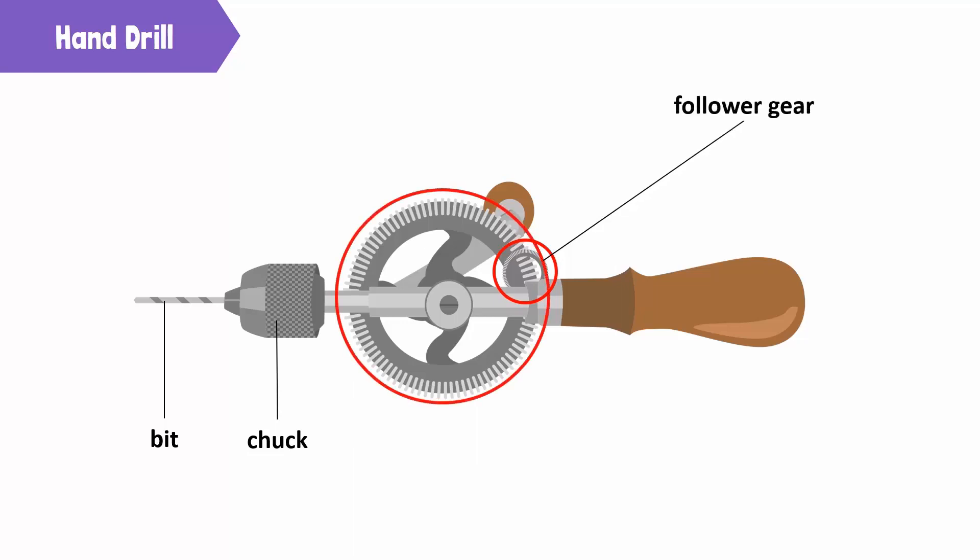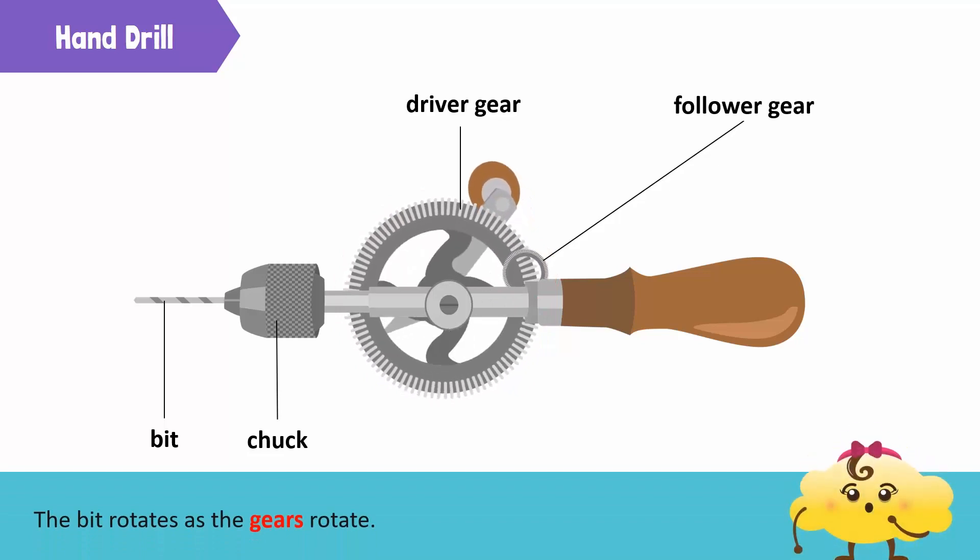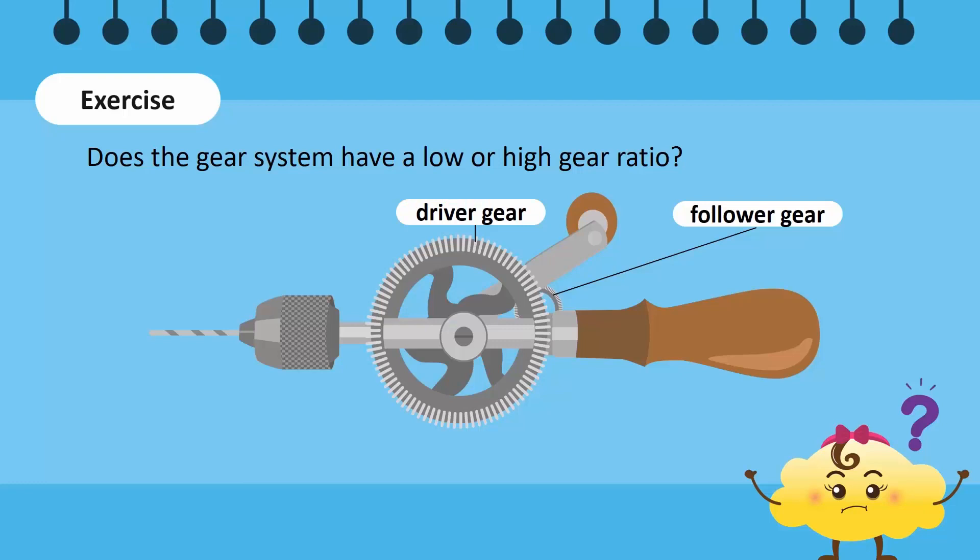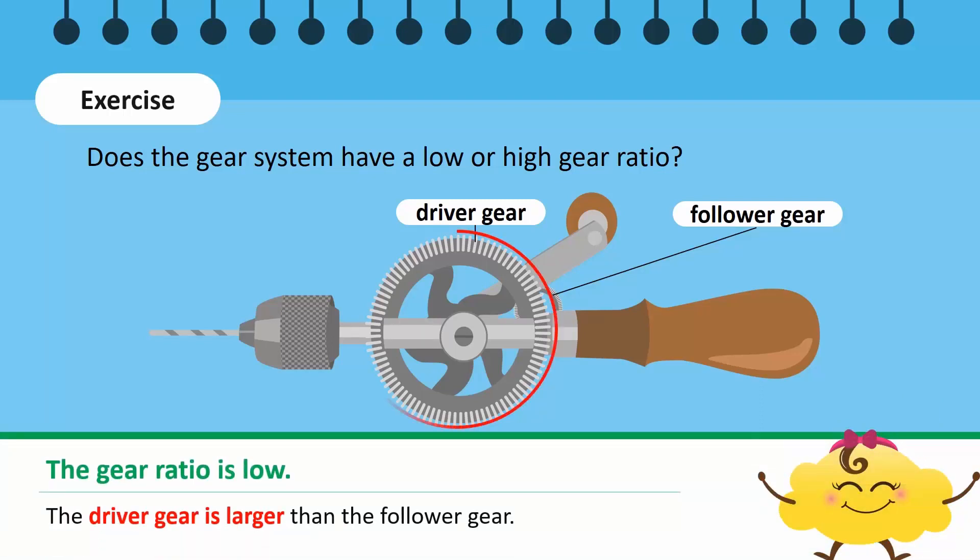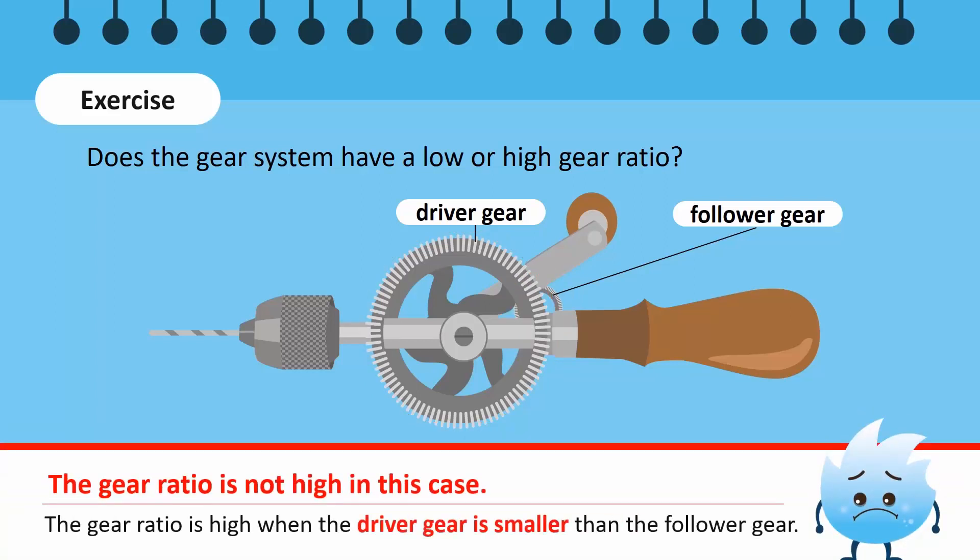Time for an exercise. In a hand drill, does the gear system have a low or high gear ratio? The gear ratio of this hand drill is low. This is because the driver gear is larger than the follower gear. The gear ratio is high when the driver gear is smaller than the follower gear.